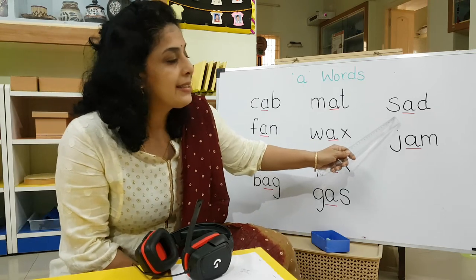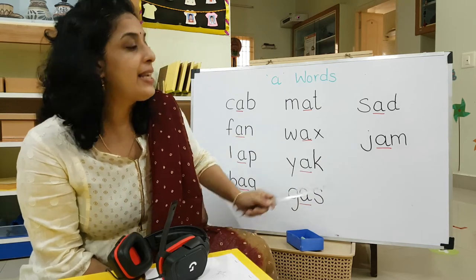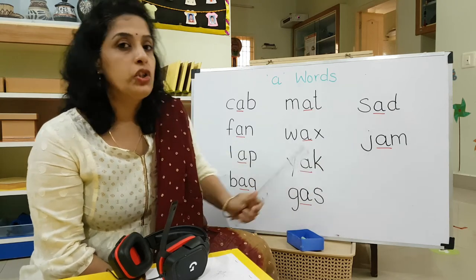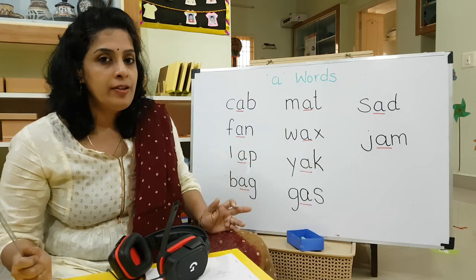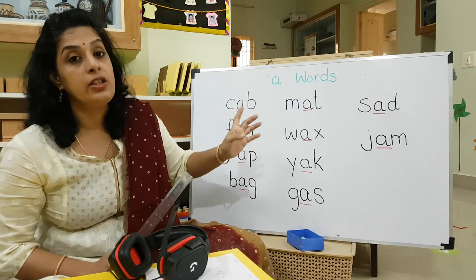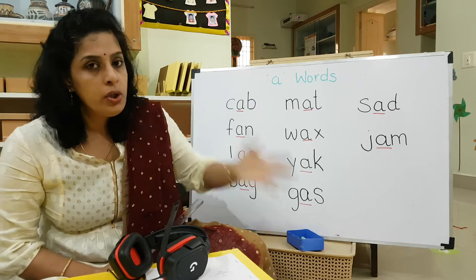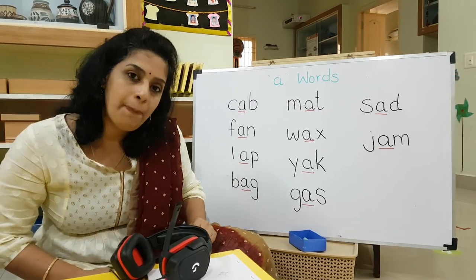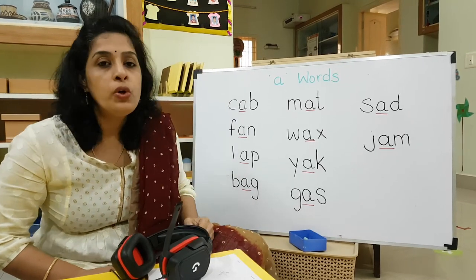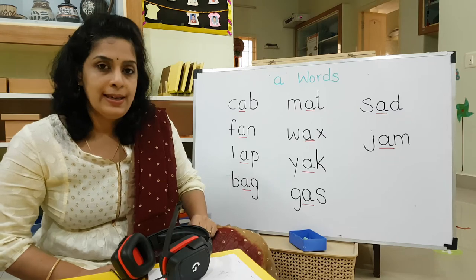Next one is S-A-D. Sad. Next one: J-A-M. Jam. So now, no more 'at' words. When you are going to do your oral assessment and your written assessment, you are going to blend three letters. I am not giving you big words right now — three letters, you blend and do your assessment. I am sure you can do it because most of you have done it in the pink series.